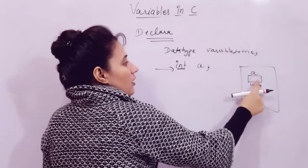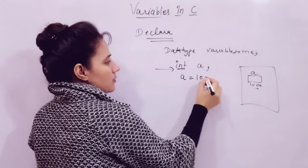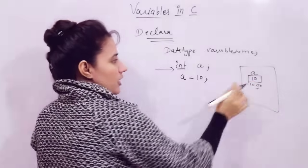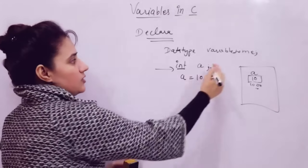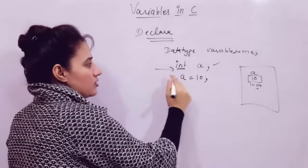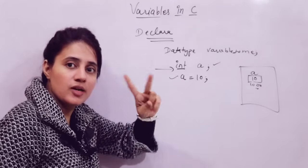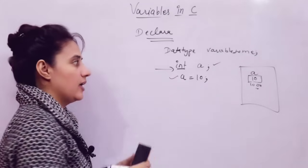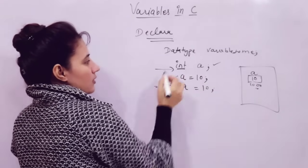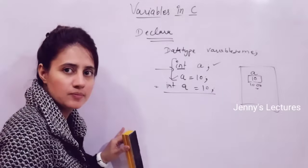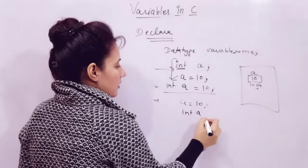If you want to store some value, you can write 'A = 10;' and 10 would be assigned and stored at this location. This 'int A;' is the declaration of a variable and 'A = 10;' is the initialization. You can also do declaration plus initialization in a single statement, like 'int A = 10;'. Rather than two lines, you can write it in a single line.